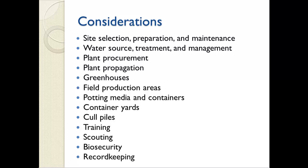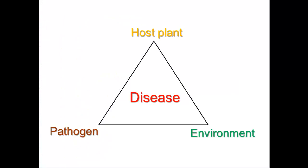The manual contains questions and checklists about each of these components to help you figure out key points of vulnerability. Let's now take a walk through your nursery. But first, here's the disease triangle again from last week — keep in mind that we're trying to prevent the convergence of the susceptible host plant, a virulent pathogen, and the conducive environment, which in the case of Phytophthora generally means lots of water.